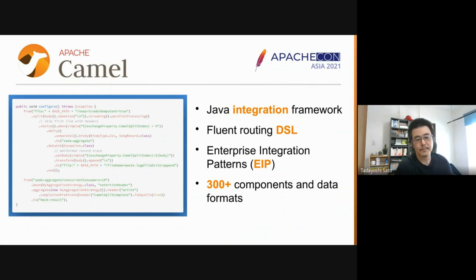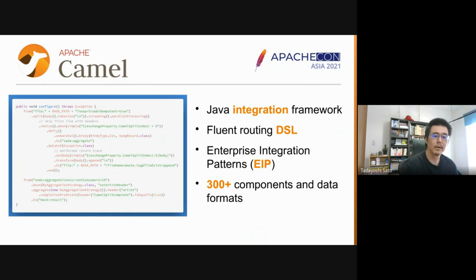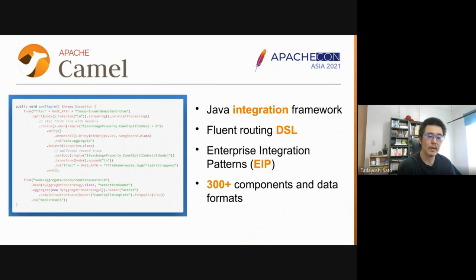First, Apache Camel. For a more detailed introduction, if you missed the first session on Apache Camel by Klaus and Andrea, I highly recommend watching the recording. In the context of integration scripting, Apache Camel is a Java integration framework widely used in many enterprises worldwide. You can write message routing between systems with its friendly DSL, as you can see in the source code example.